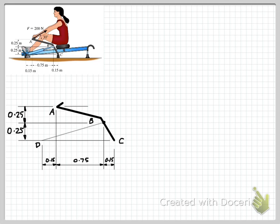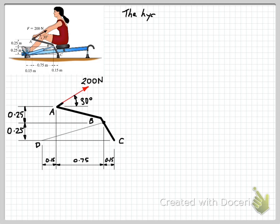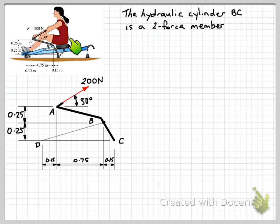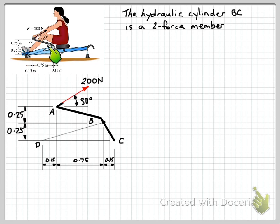We can start adding in the forces. The first place to start is to add in the loads — we have a force of 200 Newtons acting at the handle at an angle of 30 degrees to the horizontal. The other thing to note is that the hydraulic cylinder is a two-force member in equilibrium. Because it's pin-connected at both ends with no other forces acting on it, the force at B and the force at D must be equal, opposite, and collinear. So we know the direction of the force at B.